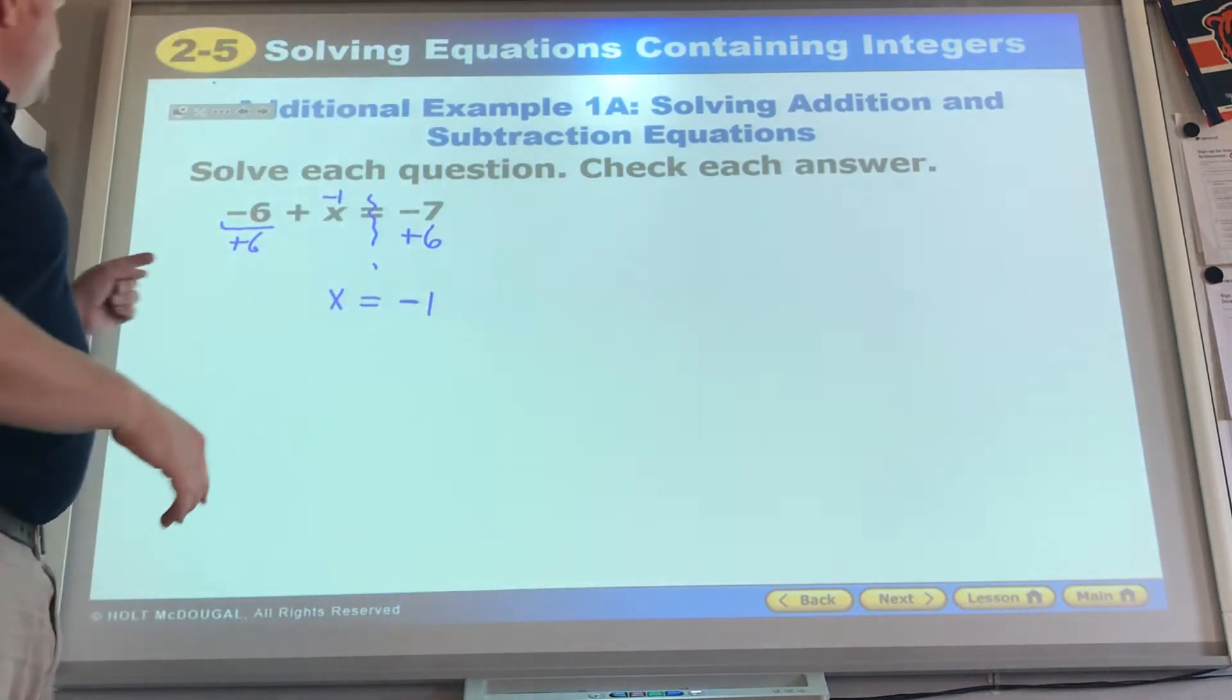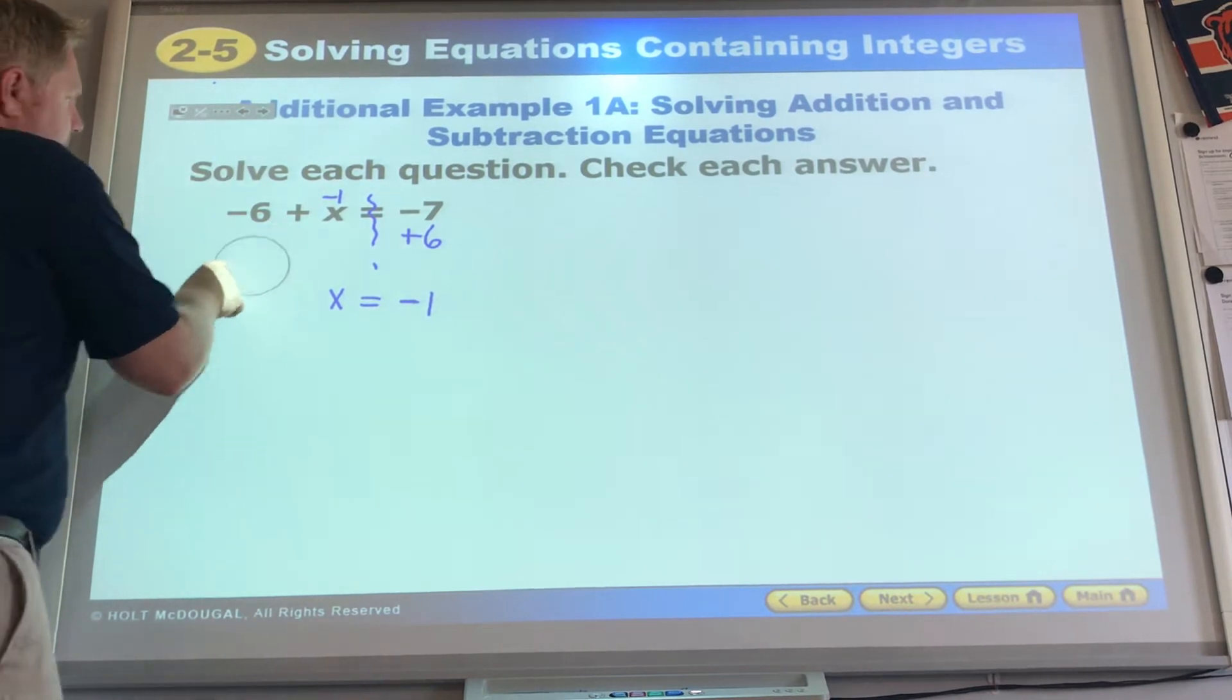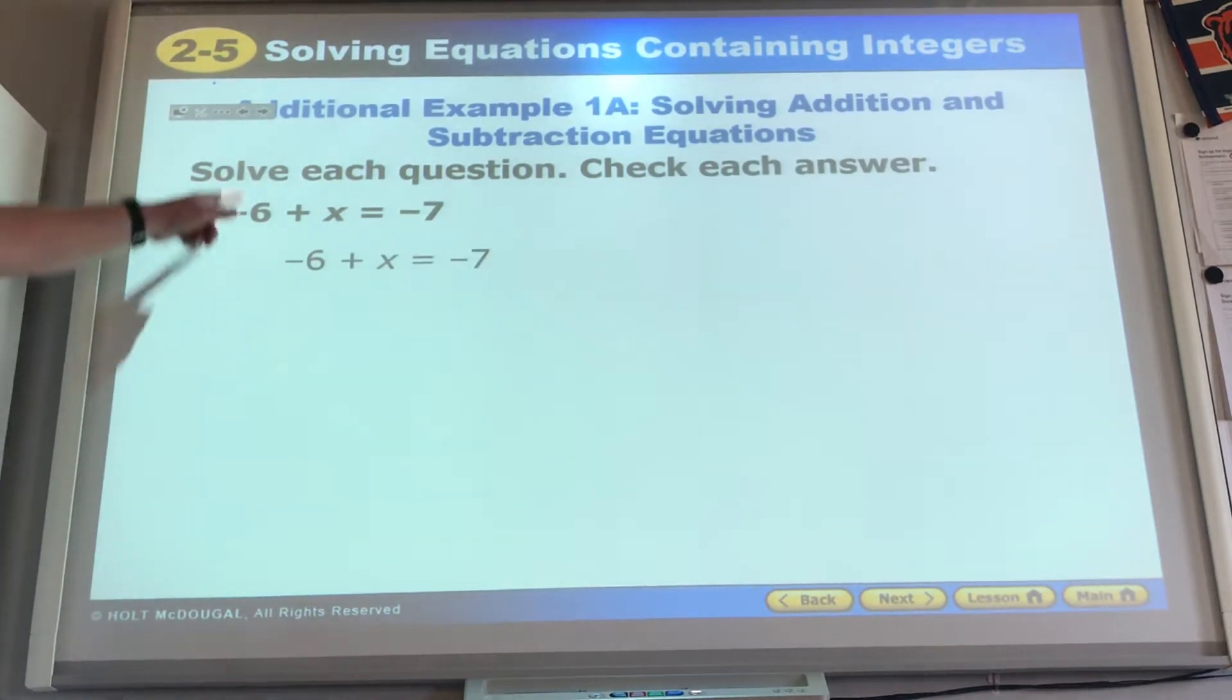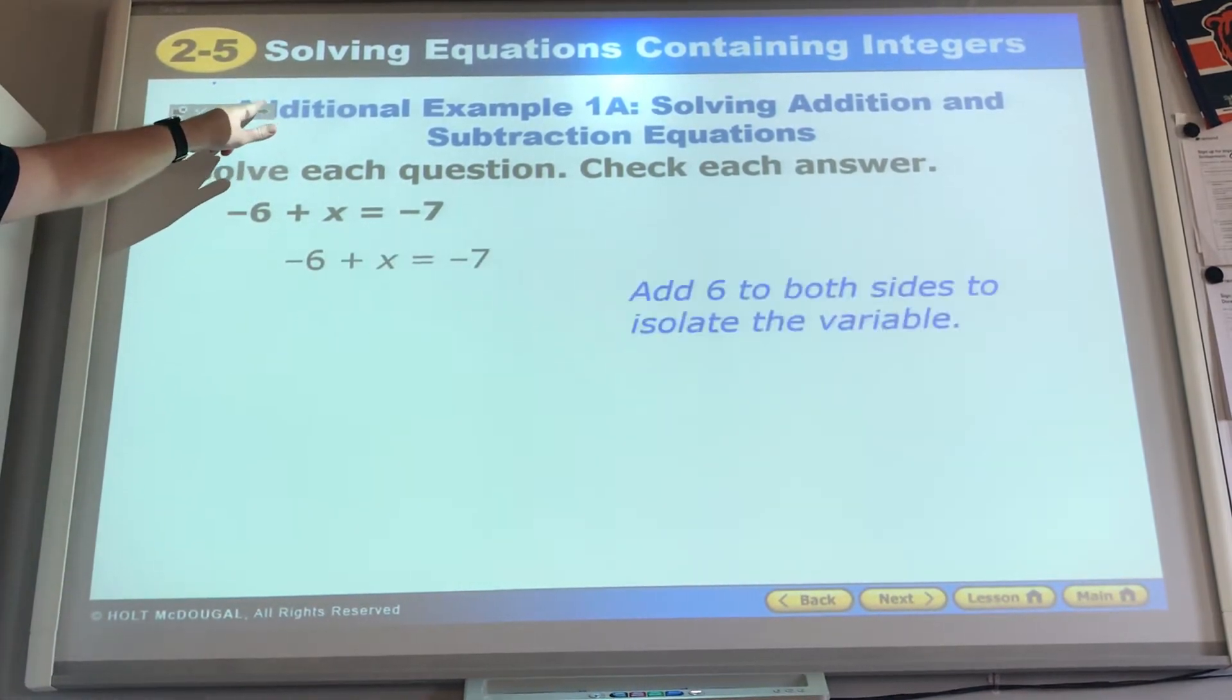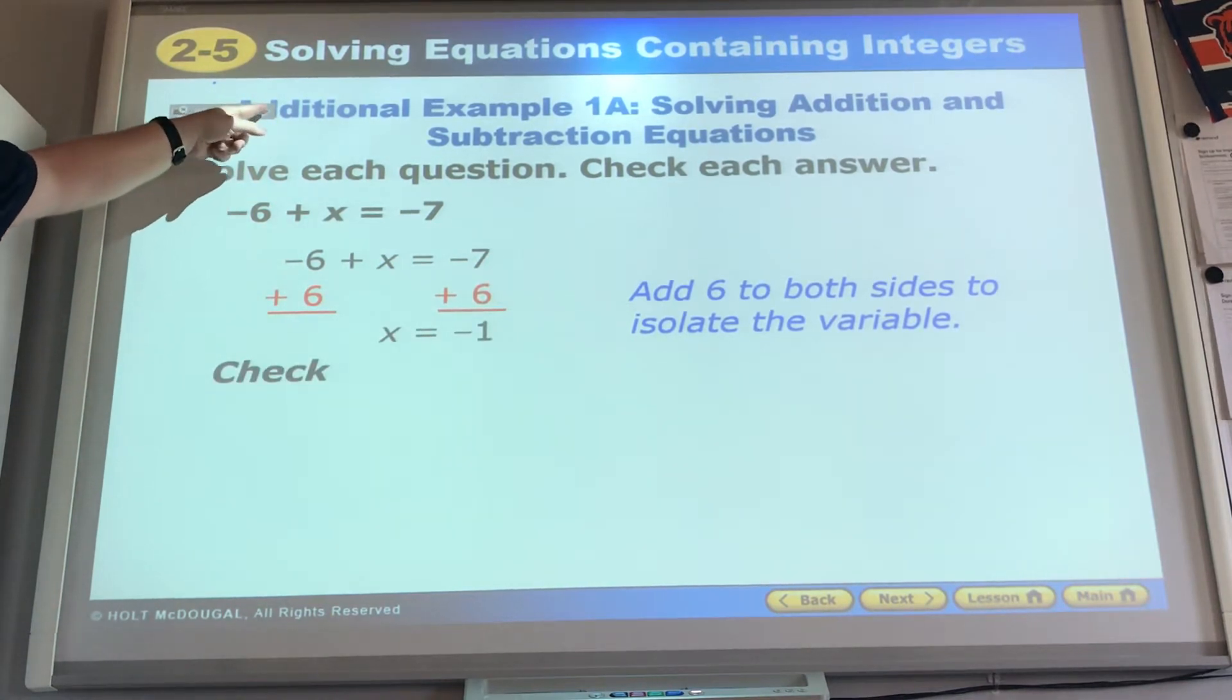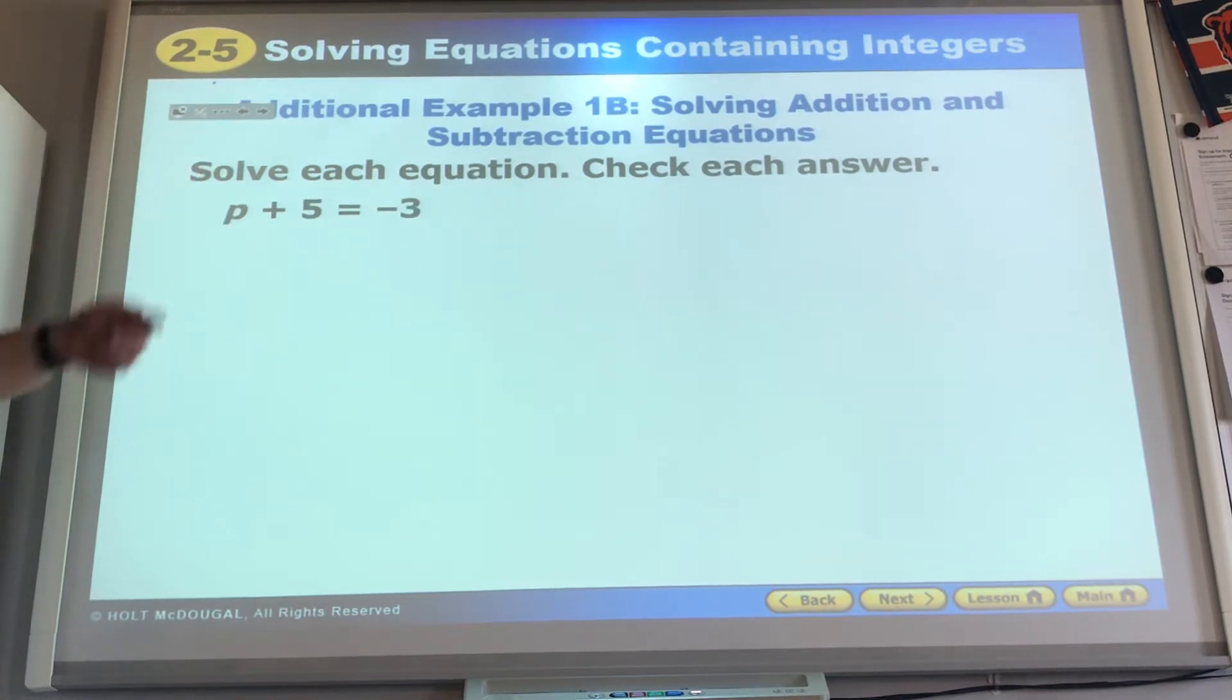Negative 6 plus negative 1, that does equal negative 7. It checks out. We really must look at that symbol in front of the problem. Add 6, add 6. We do the opposite of whatever number is on the side of the variable. We substitute it back in. It does check out.